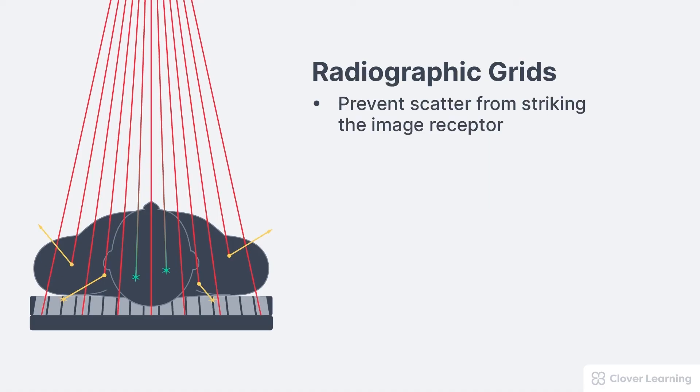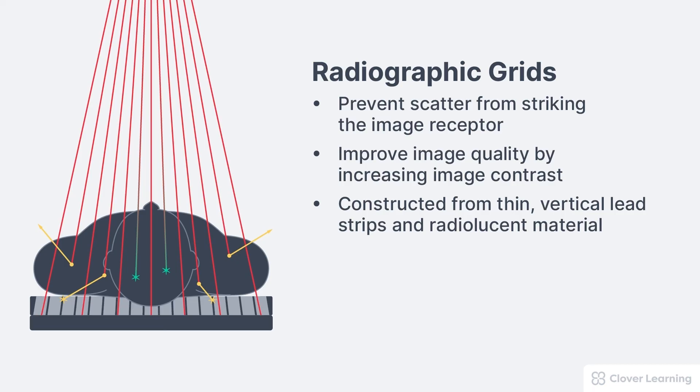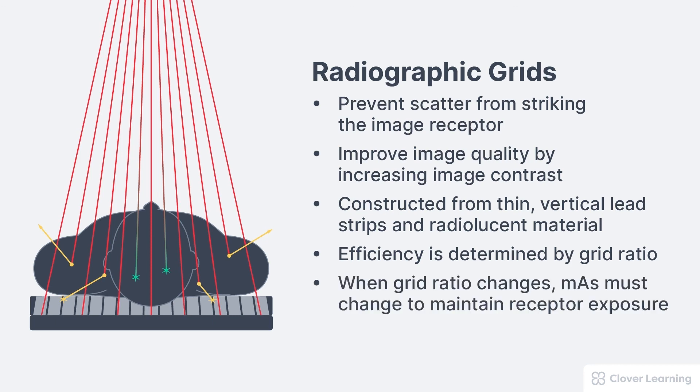To summarize the key points, grids prevent scatter from striking the image receptor. Grids can improve image quality by increasing image contrast. Digital processing does most of the work, but sometimes grids help. Grids are constructed from very thin vertical lead strips spaced apart by a radiolucent material. The efficiency of a grid is determined by the grid ratio, which is equal to the lead strip height divided by the space between the strips. Finally, when changing grid ratio, the mAs must also be changed to maintain the correct receptor exposure.